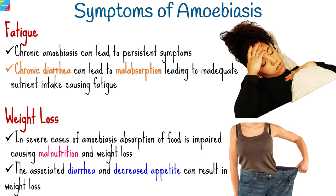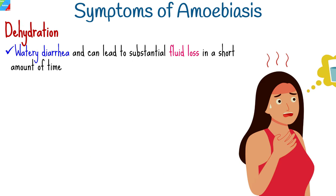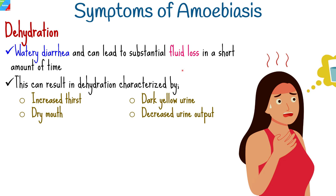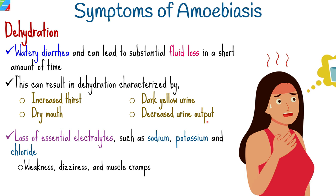Diarrhea caused by amoebiasis is typically watery and can lead to substantial fluid loss in a short time, resulting in dehydration characterized by increased thirst, dry mouth, dark yellow urine, and decreased urine output. Additionally, diarrhea and vomiting can cause loss of essential electrolytes such as sodium, potassium, and chloride. An electrolyte imbalance can further exacerbate dehydration and lead to symptoms like weakness, dizziness, and muscle cramps.